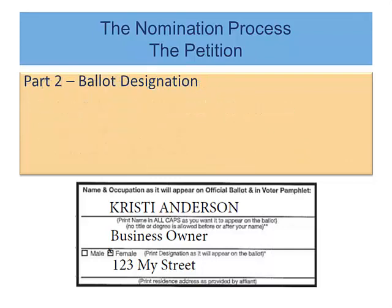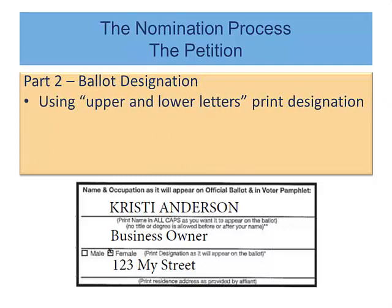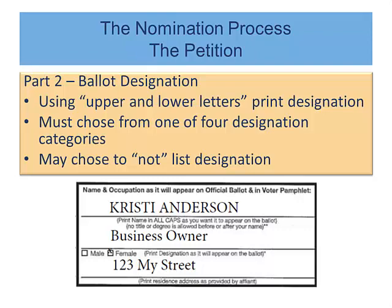Part two is the ballot designation. Using both upper and lower case letters, the ballot designation shall be printed. The candidate must choose from one of the four types of designation categories, or choose not to list a designation. As mentioned, the regulations for ballot designations are lengthy and complicated; therefore, those instructions are covered in a separate video.